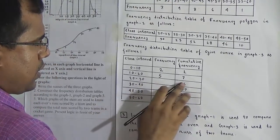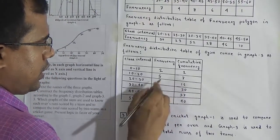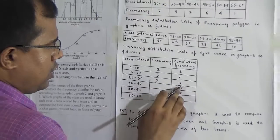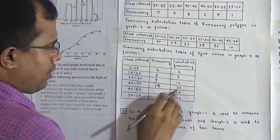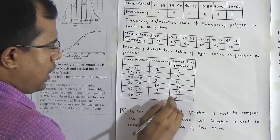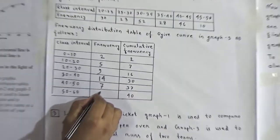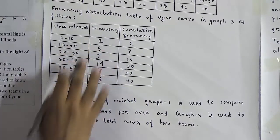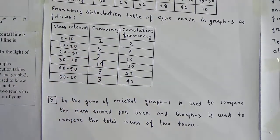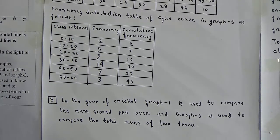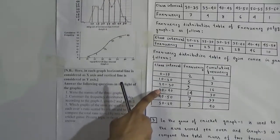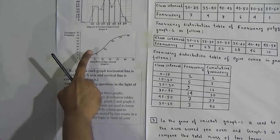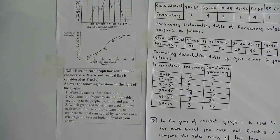The frequency of the third class interval is 16 minus 7, which equals 9. Then 30 minus 16 equals 14. Then 37 minus 30 equals 7. Then 40 minus 37 equals 3. Dear students, we have made the frequency distribution table of this graph and we have solved question two.